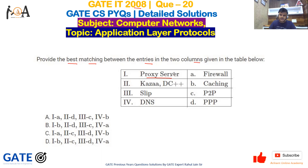The first term is proxy server. A proxy server is basically a server which is generally used to provide information requested by the client, where the proxy server acts as an intermediary. It best matches with firewall. The work of a firewall is to protect the internal server from outside servers like the internet, which might be unauthenticated. So proxy server best matches here with firewall.